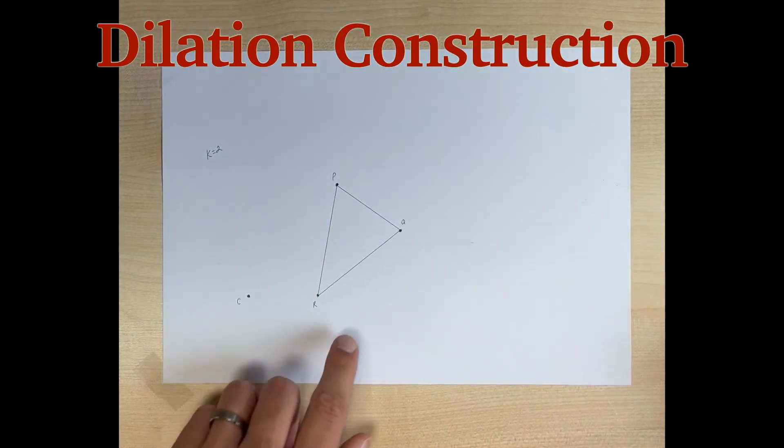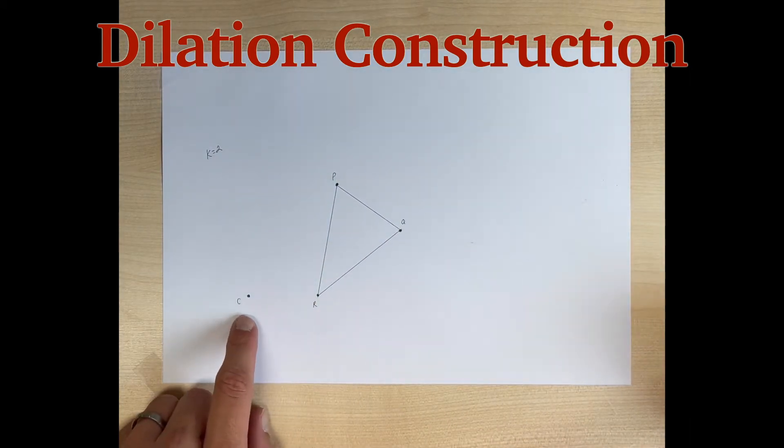We're going to start off with our triangle and then we want a point that we are going to use as our center of dilation. Here I'm going to use this point, call it point C.